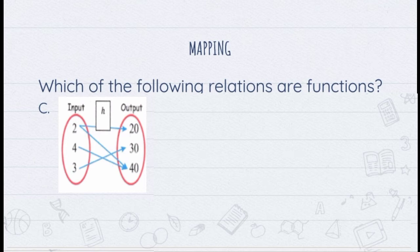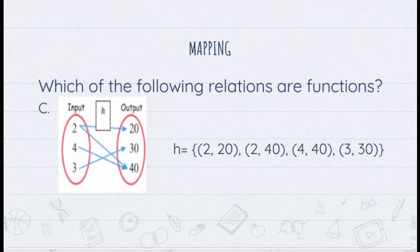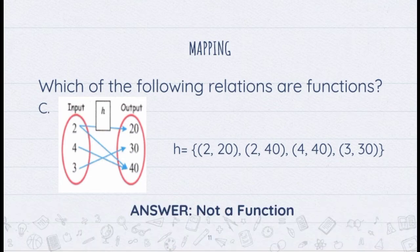We have here another map of relation h. Making it into a set of ordered pairs, we have (2,20), (2,40), (4,40), and (3,30). Notice that the x value 2 was repeated twice under the ordered pairs (2,20) and (2,40). Therefore, this is not a function.